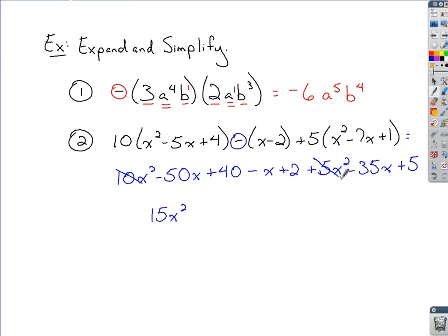So like terms to combine, if I go in order of my powers from the top to the bottom, I'd have 10x squared and 5x squared, right? That would be 15x squared. As far as x's are concerned, I've got a negative 50x, a minus 1x, and a minus 35x. So that's minus 86x. And our remaining constants would be 42 and 5, so 47. That would be our simplified expression.